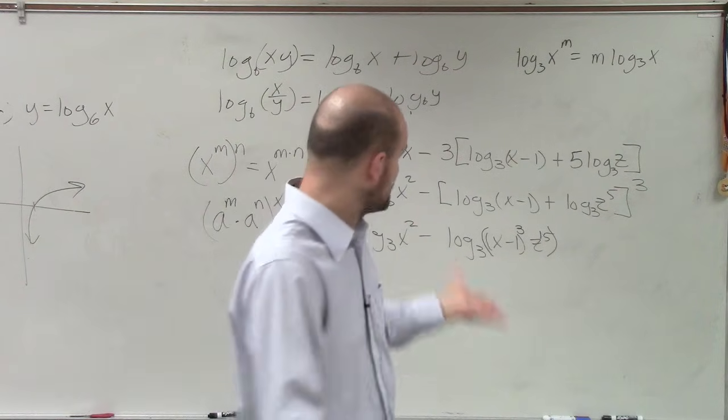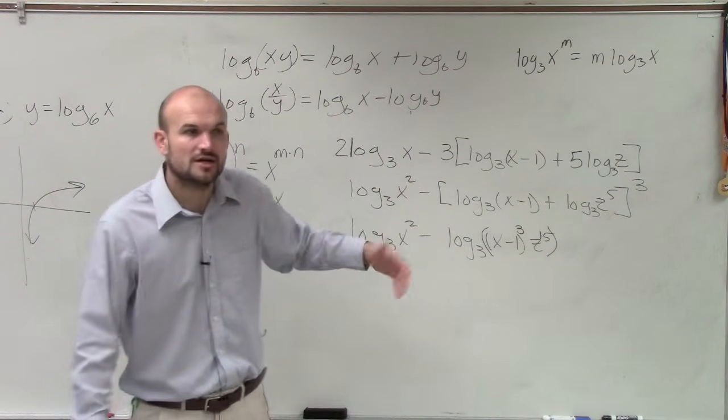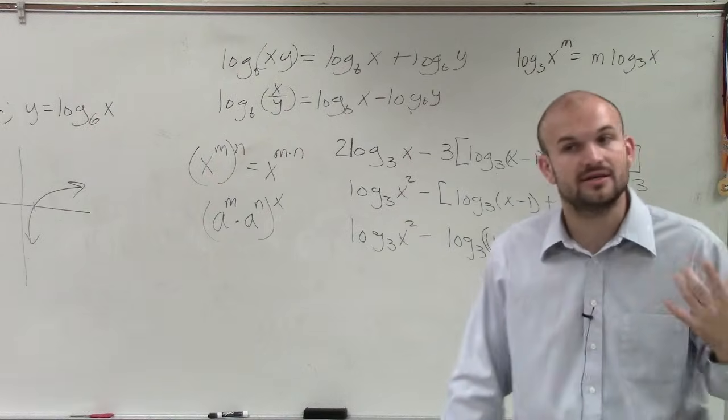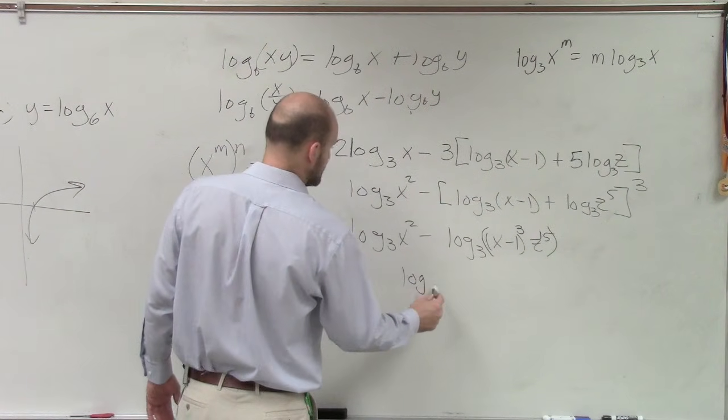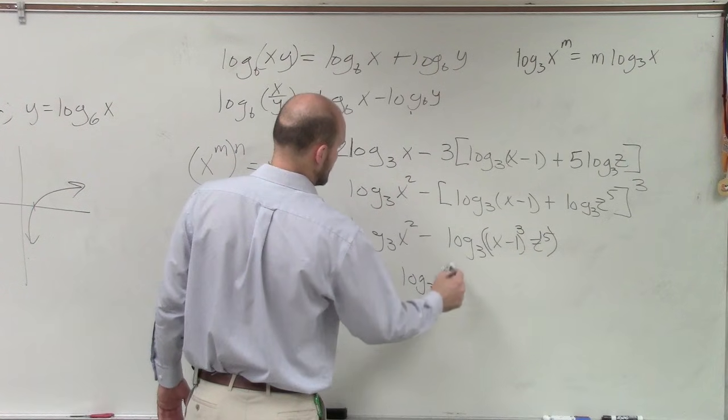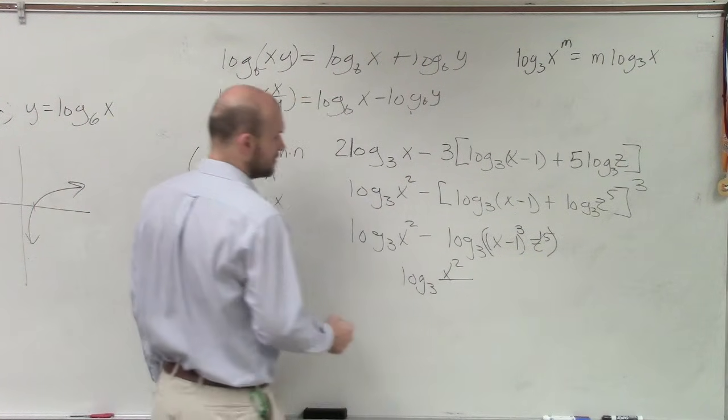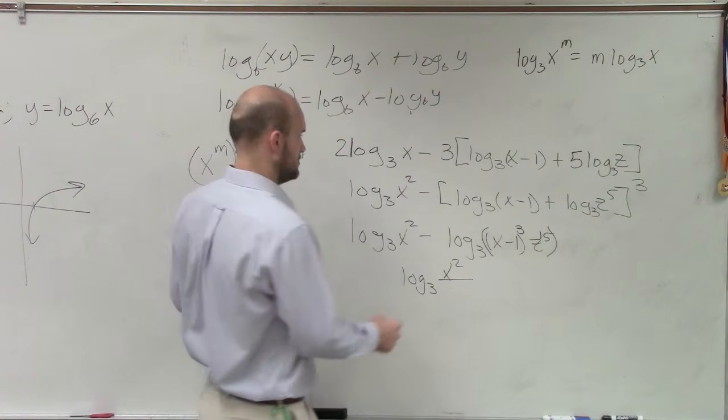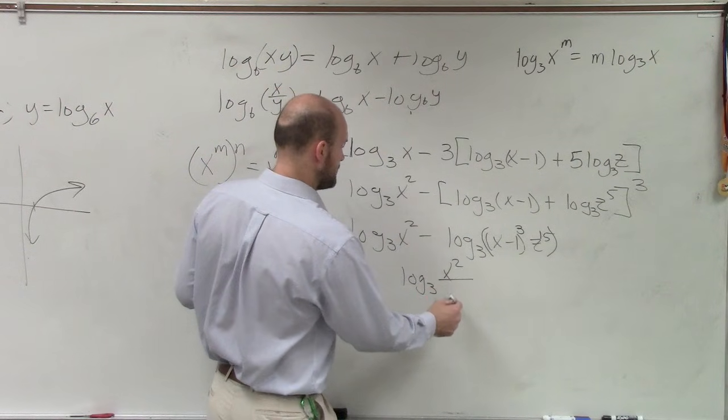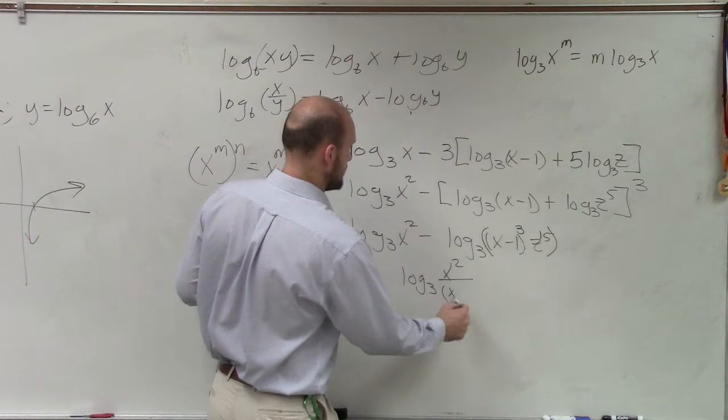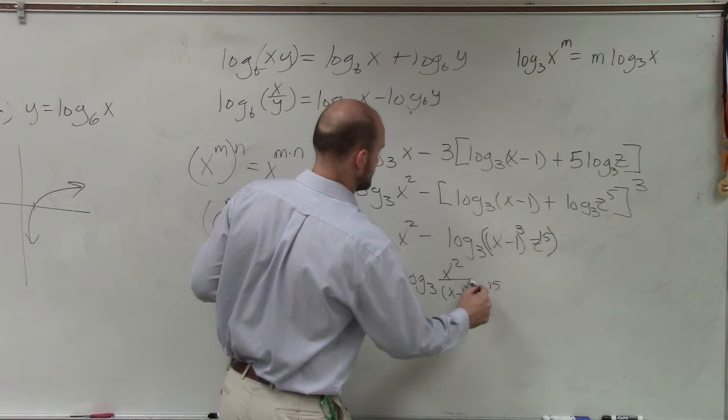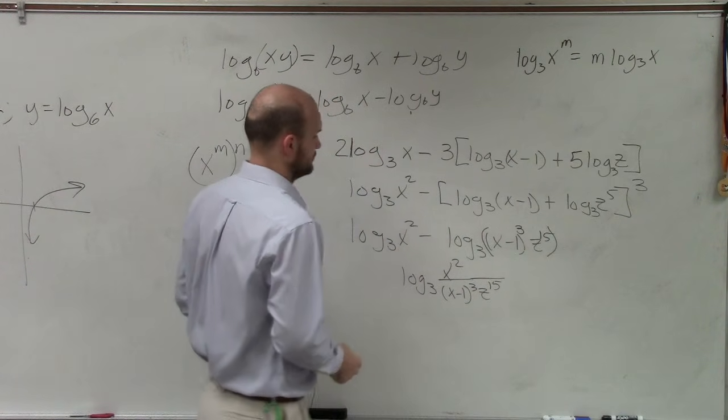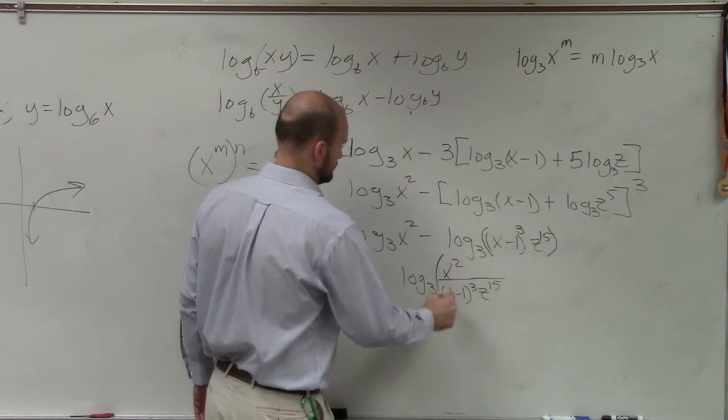Now the next thing is we have subtraction, so therefore we know we can write this as a single quantity with division. So therefore, this becomes log base 3 of x squared all over x minus 1 cubed z to the 15th.